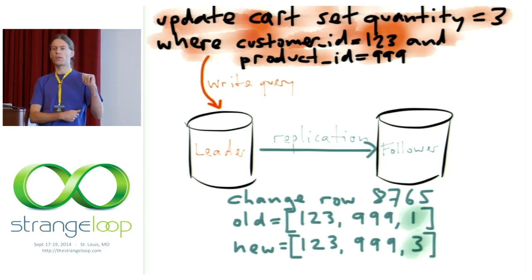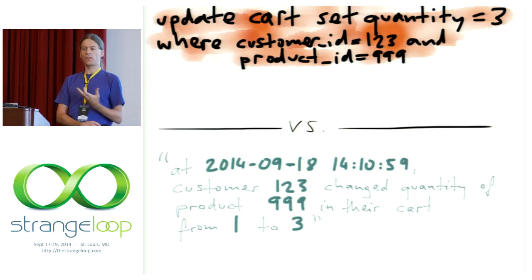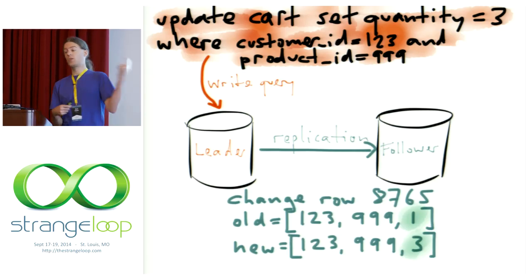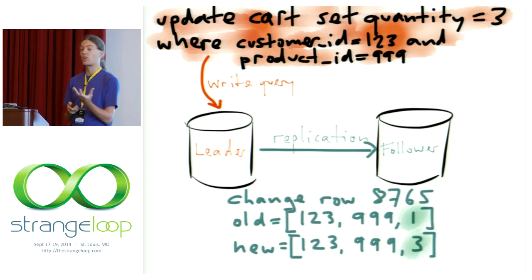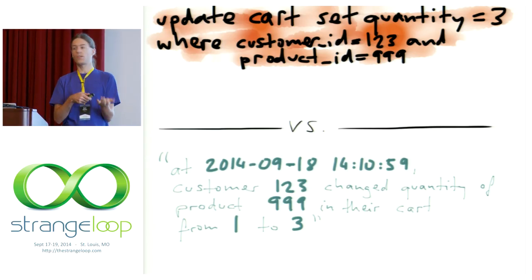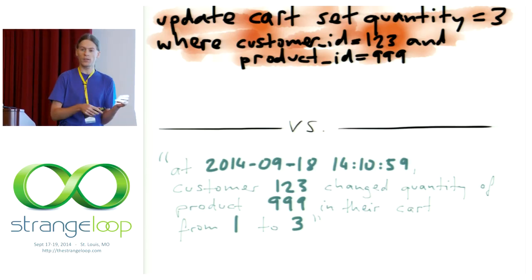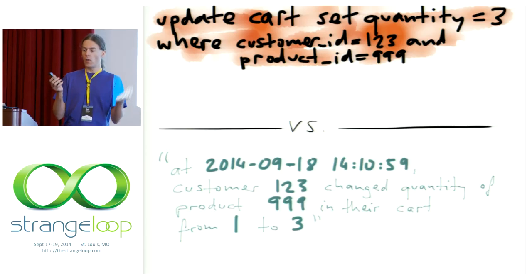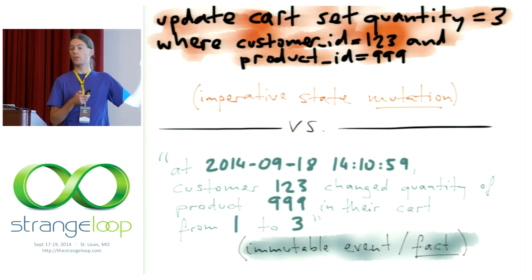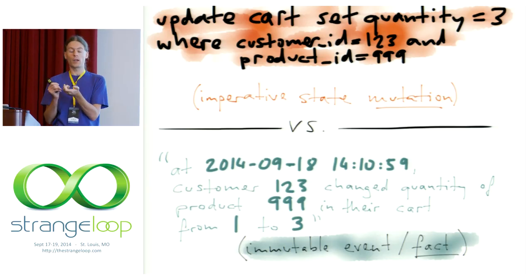Notice what has happened here. At the top you have an imperative statement saying 'make the state mutation for me for rows matching some conditions.' Whereas the event being replicated from one machine to the other has a different form — it's actually saying that at a particular point in time, a certain customer decided to change the quantity of a certain product from one to three. And this is actually a fact. Even if the customer later removes it from their cart, or changes the quantity again, the fact that they, at this point in time, made this modification remains true. This is an immutable fact compared to an imperative modification. So databases are actually already using this idea of immutability internally.